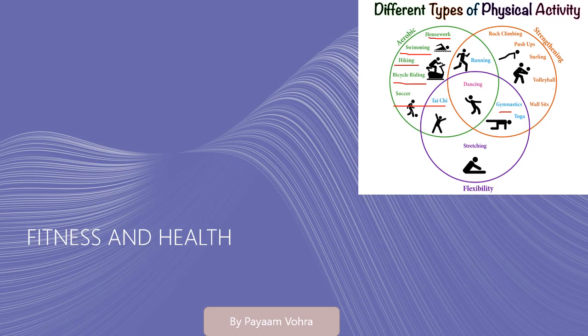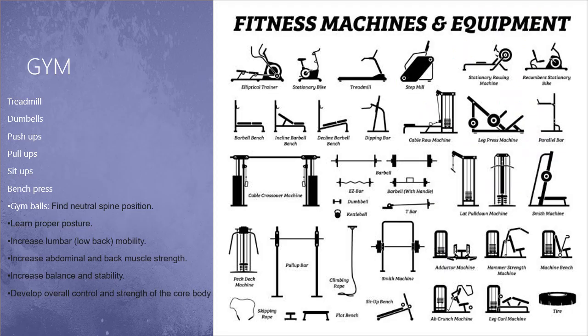Activities also include soccer, bicycle riding, hiking, swimming, and housework. Firstly, the gym — there are certain equipments and instruments via which you perform exercises: treadmill, dumbbells, push-ups, pull-ups, sit-ups, bench press, and the gym ball, also called an exercise ball. These are all advantages of the gym ball.